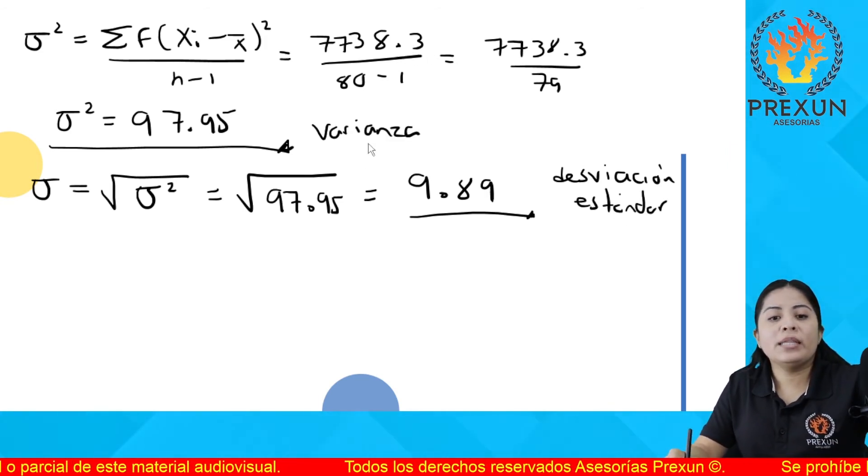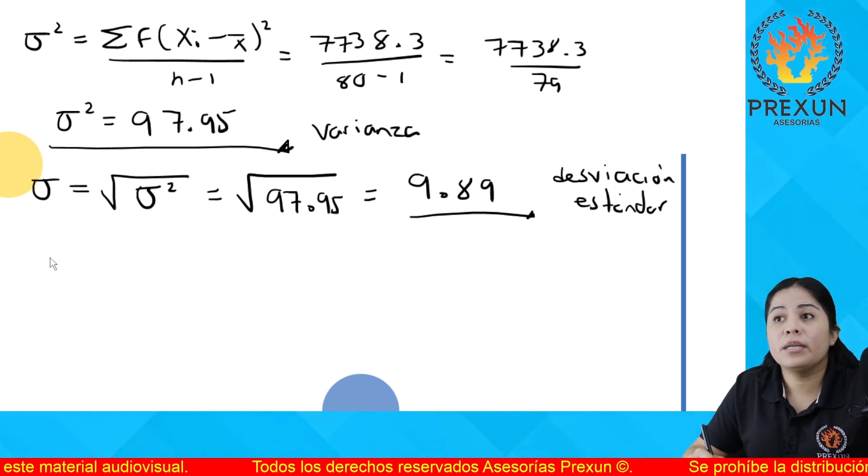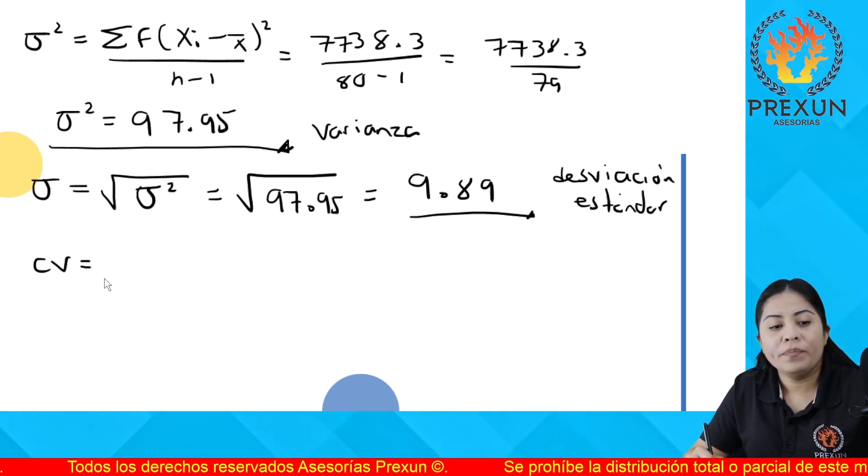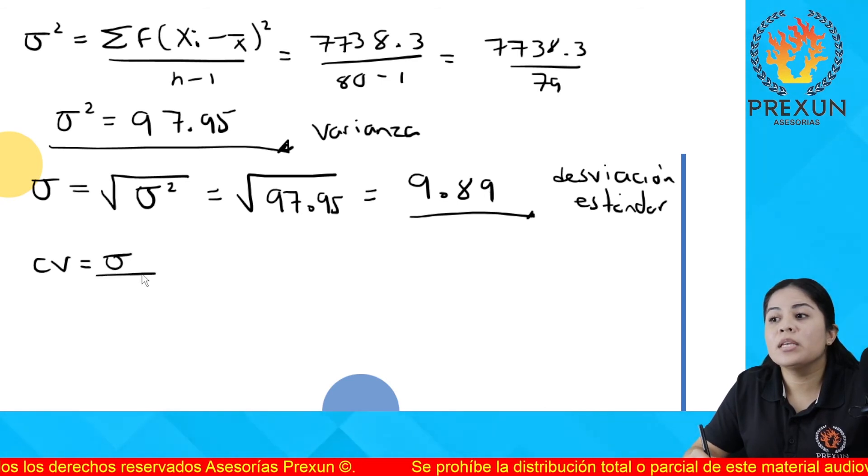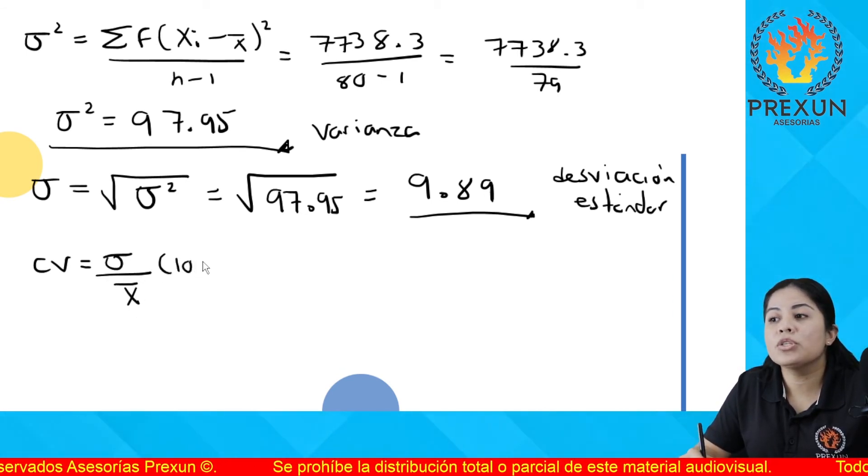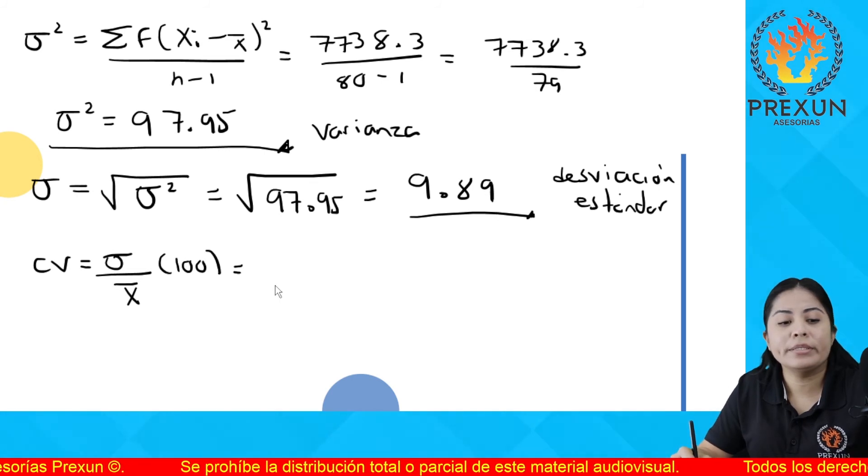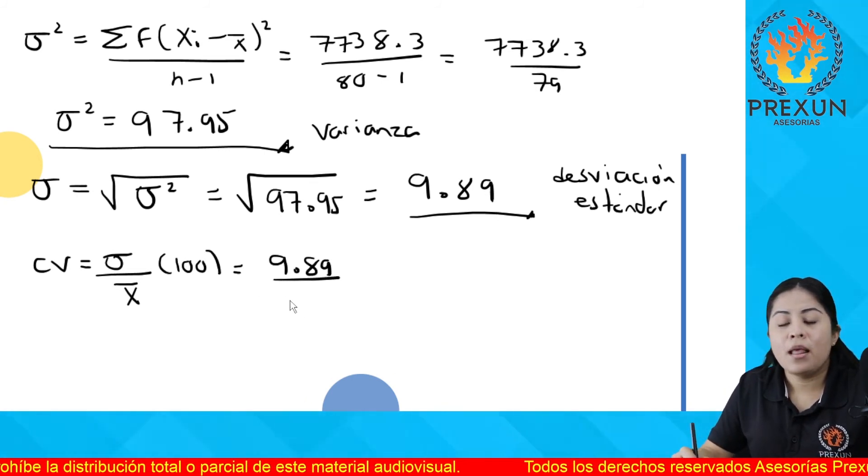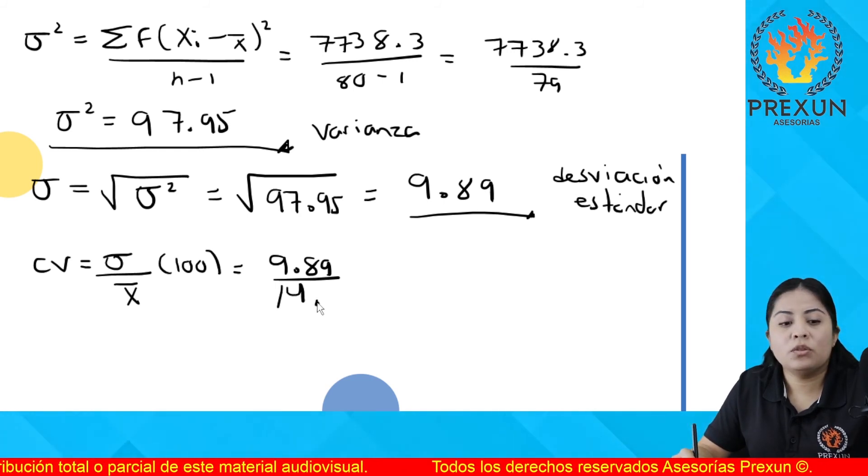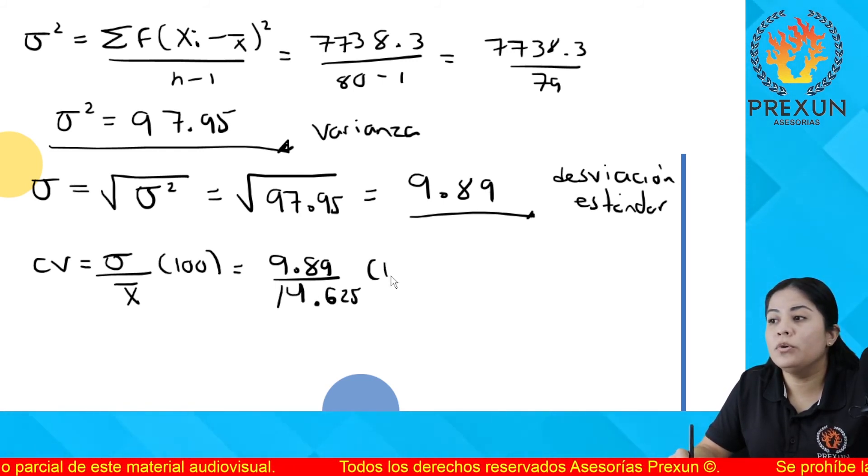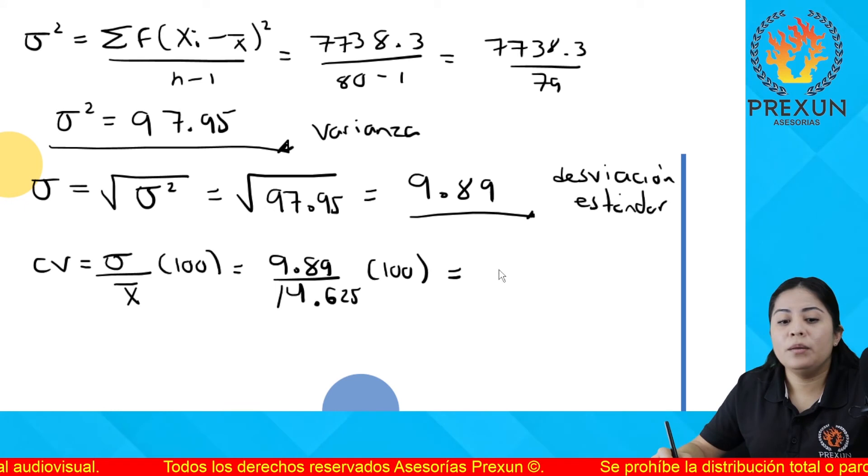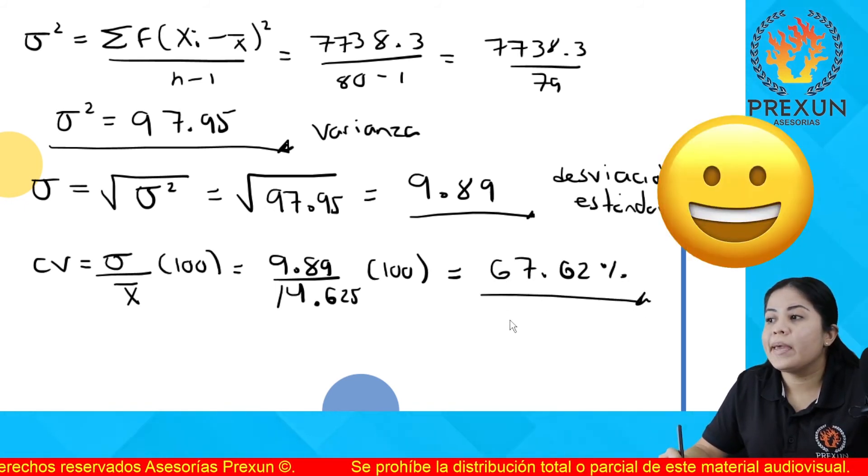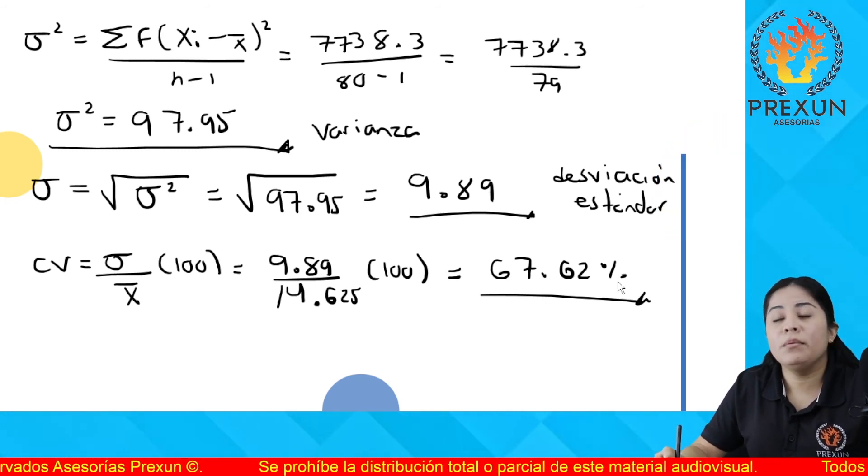Por último, nos falta el coeficiente de variabilidad. Coeficiente de variabilidad, CV, se obtiene de dividir desviación estándar entre la media por 100. El resultado va a estar en porcentaje. Esto es 9.89 entre la media 14.625 por 100. Su división y al multiplicar obtengo un valor de 67.62%. Este es el coeficiente de variabilidad.